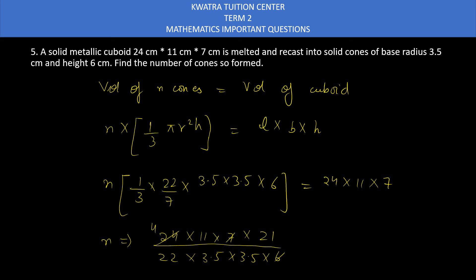Cancel 6 and 24, gives 4. Cancel 7 and 3.5, gives 1 and 0.5. Cancel 11 and 22, gives 2. 2 cancels 4, gives 2. Then you have 21 divided by 3.5 and 0.5. Multiply 3.5 and 0.5, I'm getting 1.75. Divide 21 by 1.75, gives 12 as the answer. And 2 is there in numerator. Multiply 12 with 2, gives 24. That means number of cones formed will be 24.